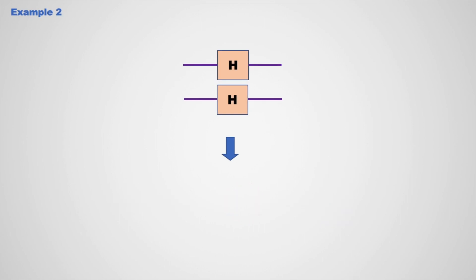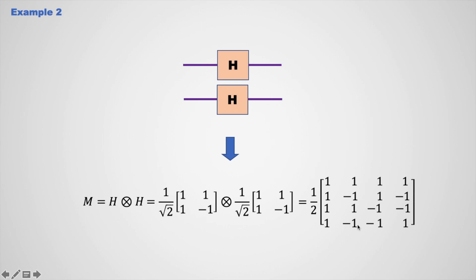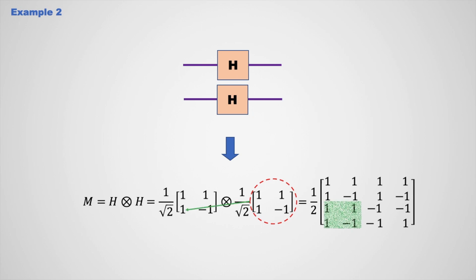Now here I am presenting another example, where you can see two parallel Hadamard gates. Here, its matrix M equals to H tensor H. H is represented by its Hadamard matrix, and this is also a Hadamard matrix. So this is the equivalent unitary matrix of these two parallel Hadamard gates. The tensor product is computed block by block, and it is the equivalent matrix of these two parallel Hadamard gates.